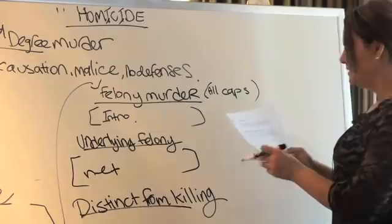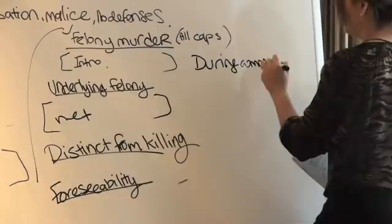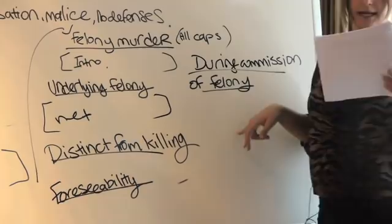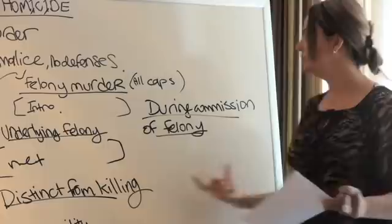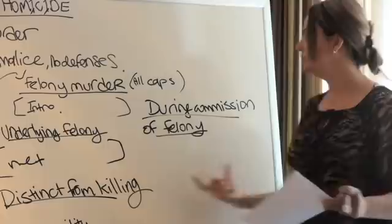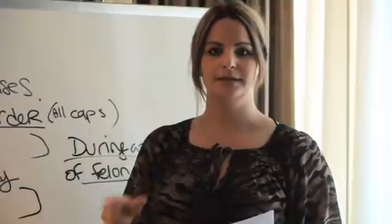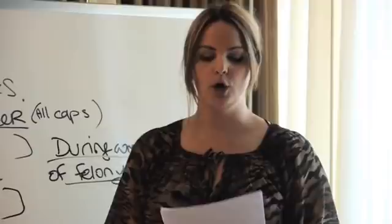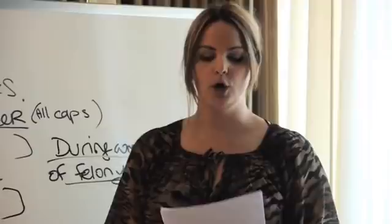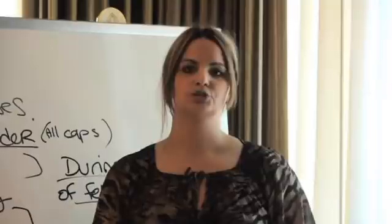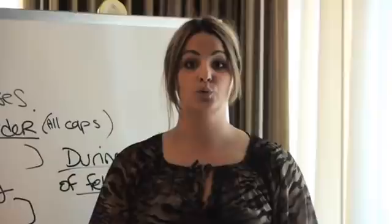Next, we have to establish 'during the commission of the felony.' The death must have occurred during the commission of the felony and not after it was terminated — this is highly tested on the MBE and a huge issue on essays as well. Remember that murders which occur while the defendant is fleeing the scene or from the cops do count. Also, in most jurisdictions, the defendant is not liable for felony murder when a co-felon is killed as a result of resistance from the felony victim or the police. There's also an agency theory and proximate cause theory regarding an innocent party being killed — a jurisdictional issue you must know.